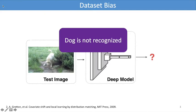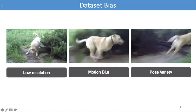The origin of the bias could be the variance in resolution, the motion blur, and the pose variety, or something else, which are quite common in practice.